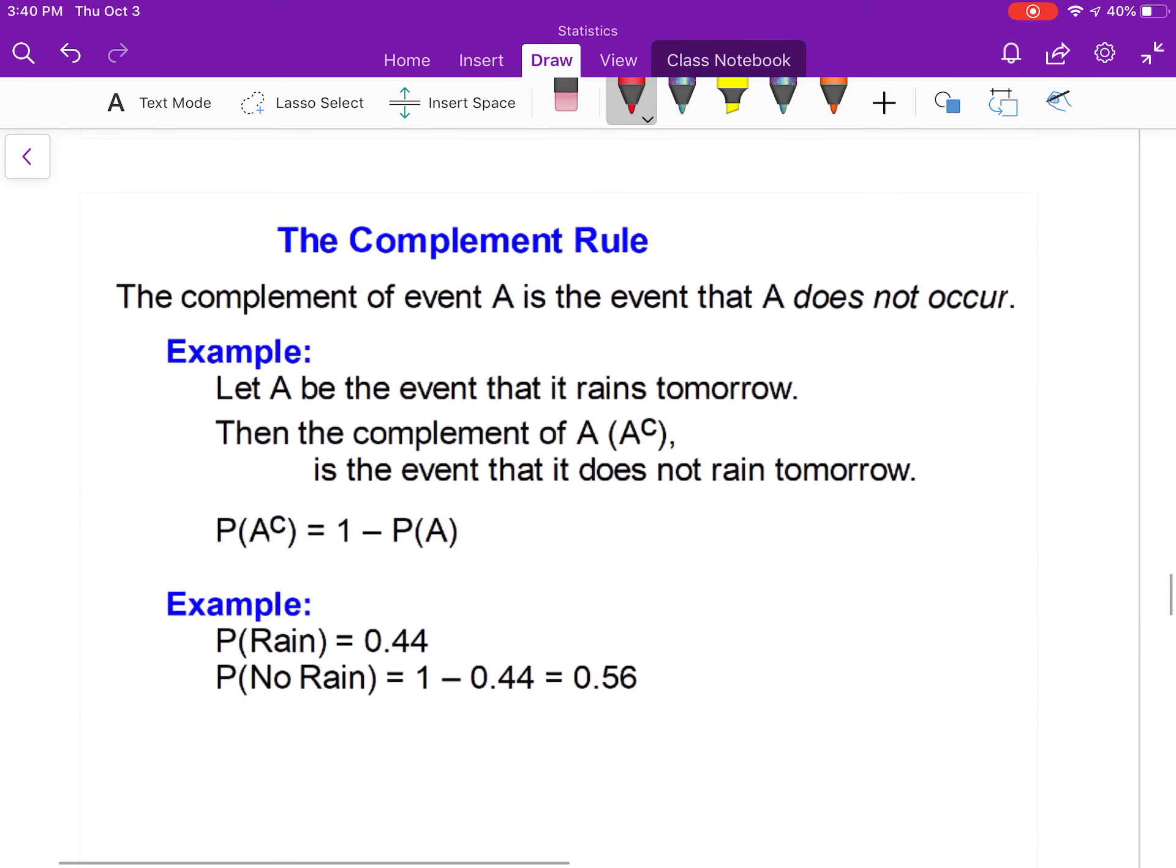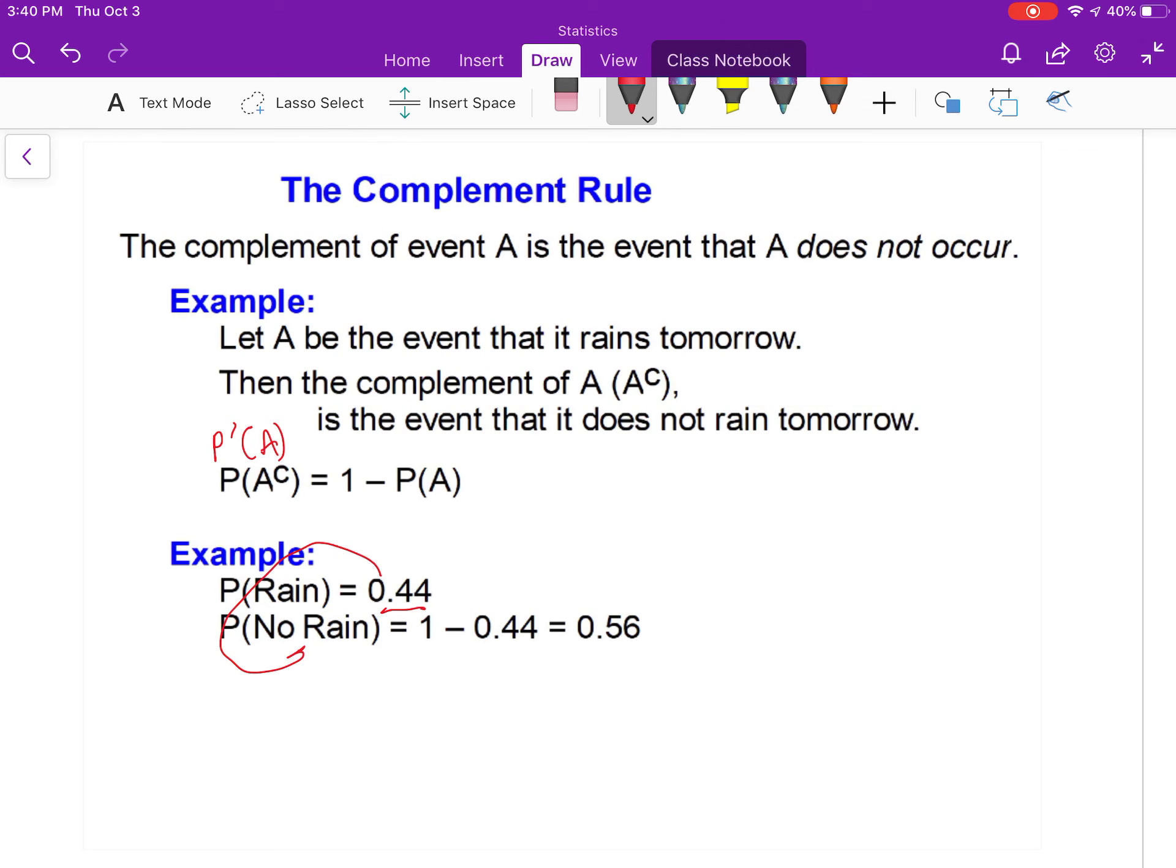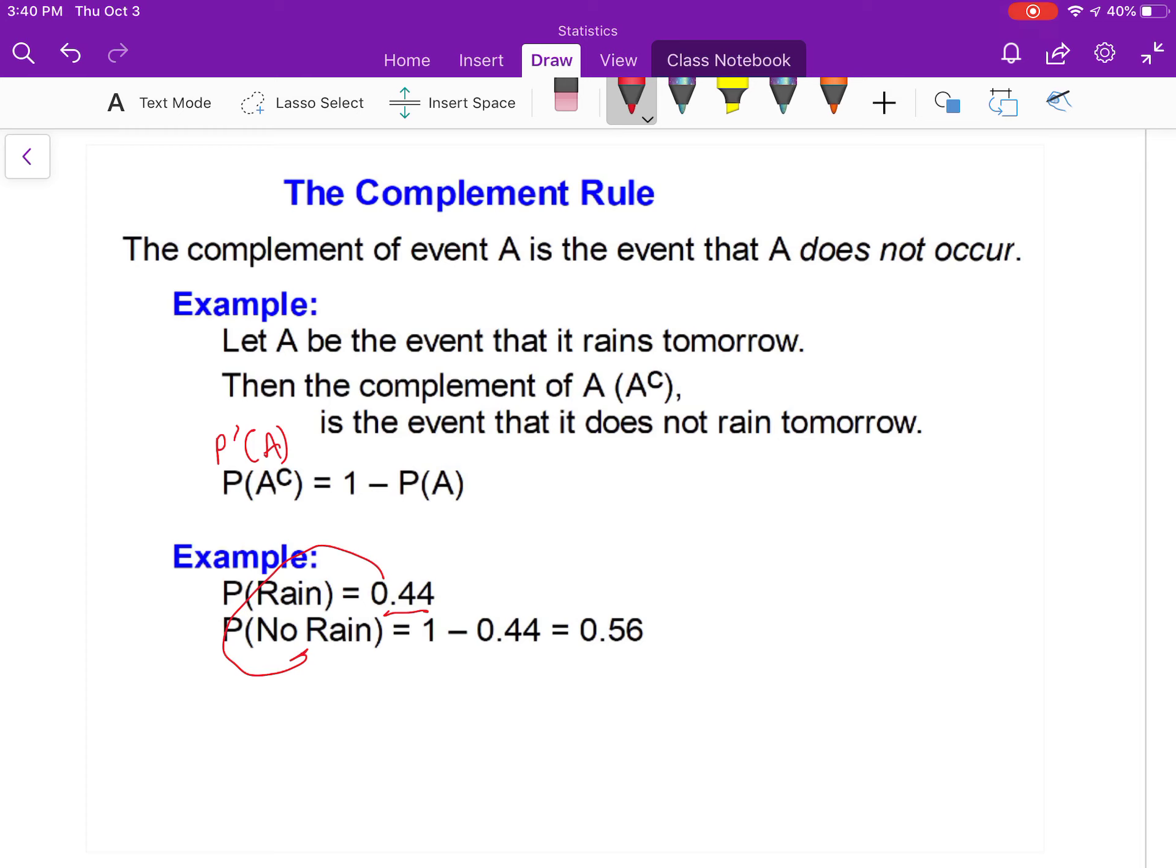That helps us out with a complement. I don't know if I care for this A^C notation; I usually go P'(A) for my complements. Let's say the probability of rain is 44%. The complement of that would be no rain. To find the probability of no rain, I go 1 minus 0.44, so I get a 56% chance or 0.56 chance of no rain. You think of it this way: the probability of rain plus the probability of not rain—those are my two options, right? It either rains or doesn't rain. Those need to add up to 1.